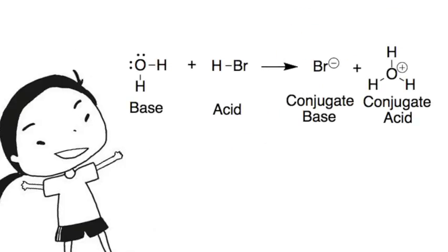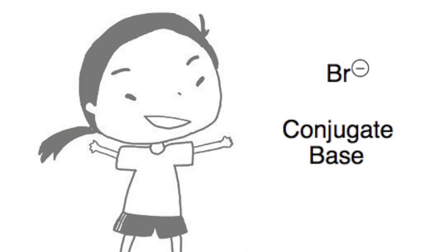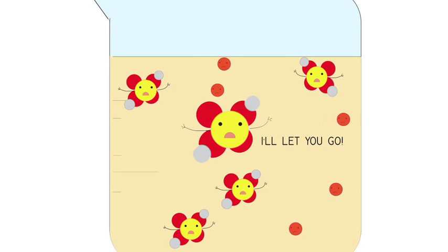We can figure it out by looking at their conjugate bases. Notice that the conjugate base has a negative charge. If that charge is stable, then the acid will be willing to give up its proton, and it'll be a strong acid.